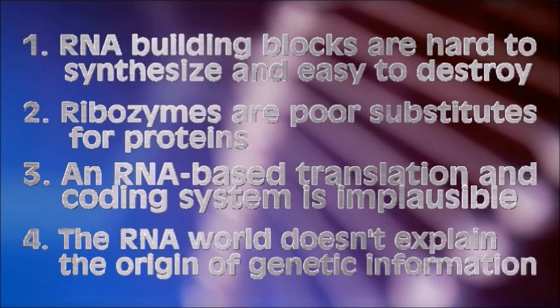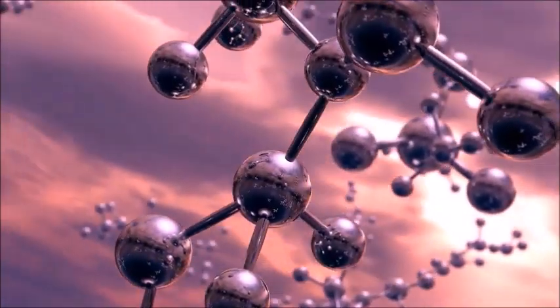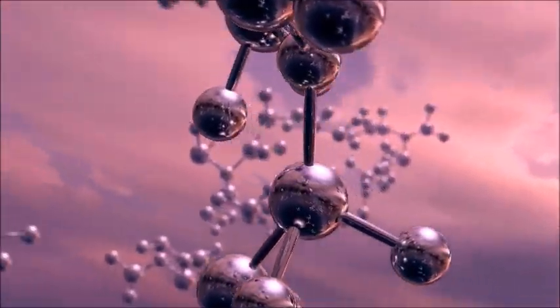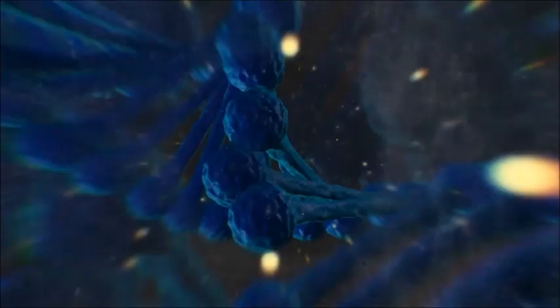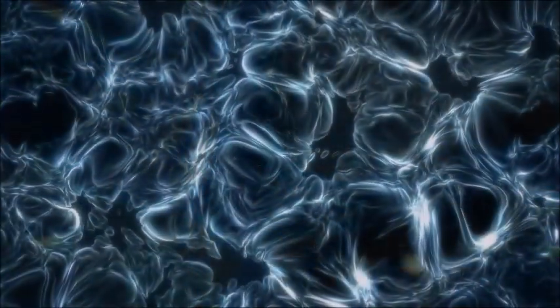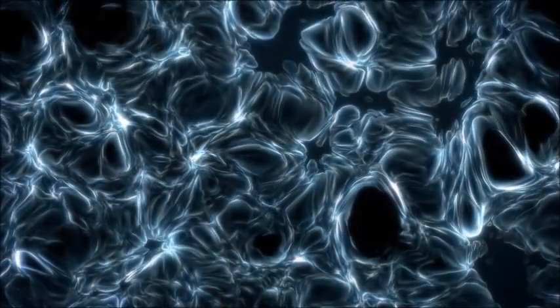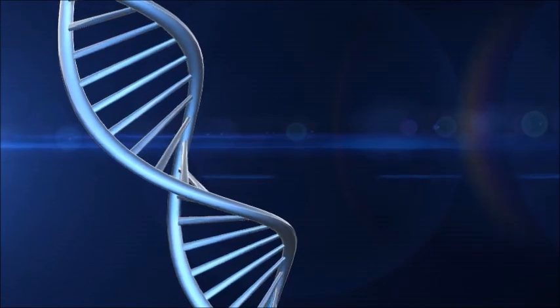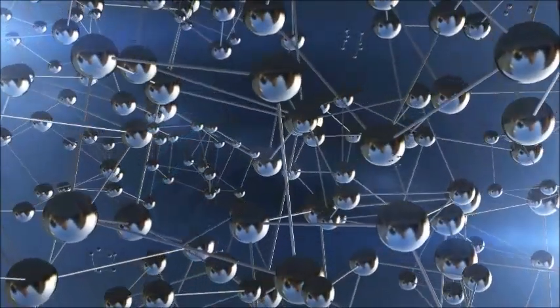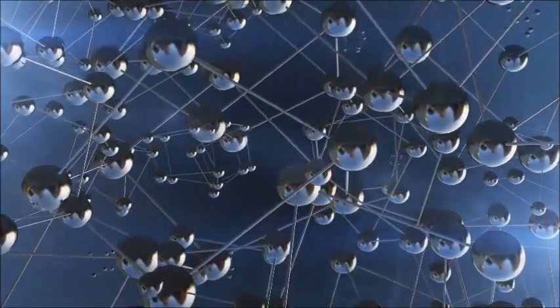Fourth, the RNA world doesn't explain the origin of the genetic information. Even if advocates of the RNA-first model are correct, they presuppose the existence of the information in RNA. They don't explain it. The origin of self-replicating RNA depends on information, and in order to transition to a protein-based system, the RNA would have had to produce over 100 different proteins, each of which would require even more genetic information. Thus, despite its popularity, there is no compelling reason to consider the RNA world hypothesis a likely candidate for explaining the origin of life.